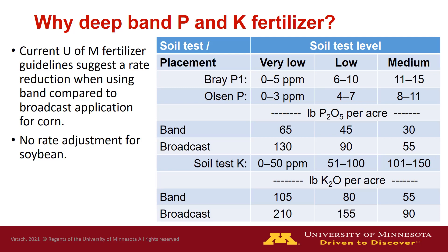In the table on the right, we have the soil test levels — very low, low, and medium — and the ranges and concentration for Bray P1 and Olsen P at those levels. Below that, we have the fertilizer guidelines for band versus broadcast in pounds of P2O5 per acre. In the very low and low categories, we recommend a 50% reduction in band versus broadcast. As we get to the medium soil test level, that diminishes, and at high it diminishes even more. The same is true for soil test K — in very low and low situations, the reduction is nearly 50%, and it becomes less at medium and high soil test levels.